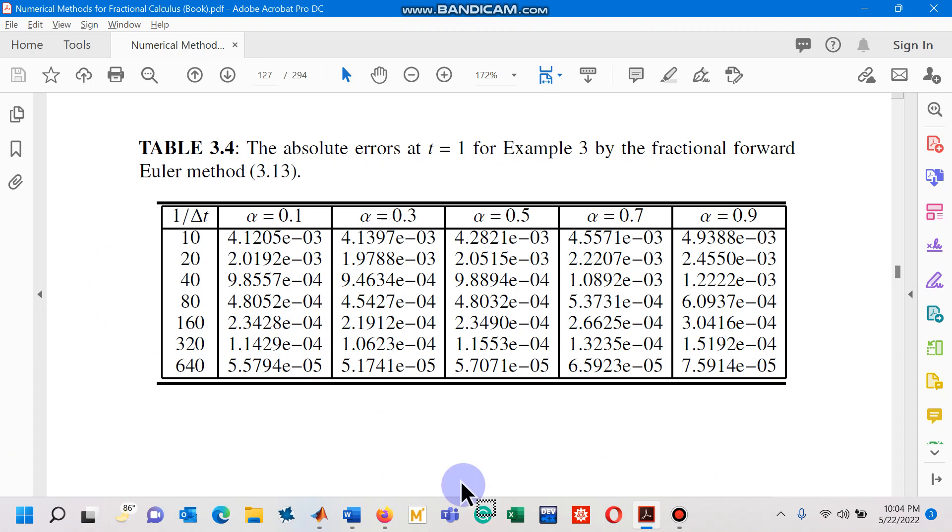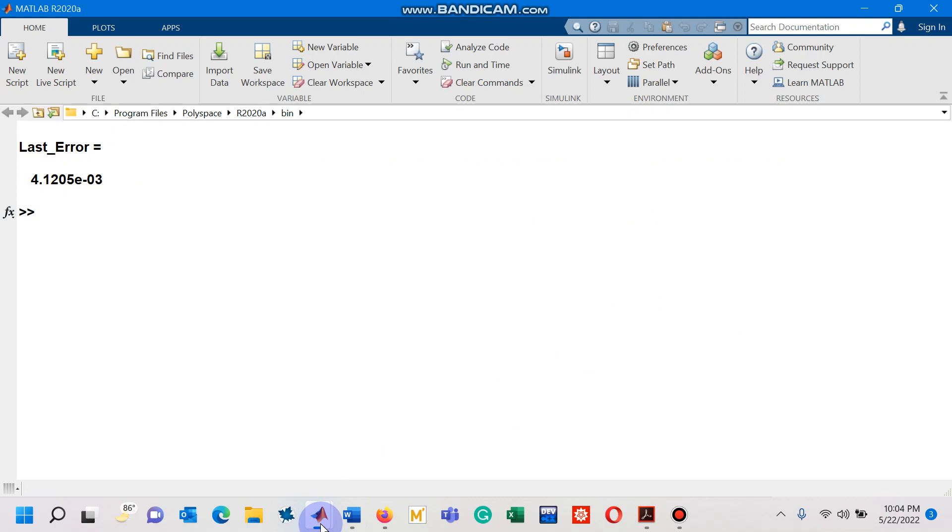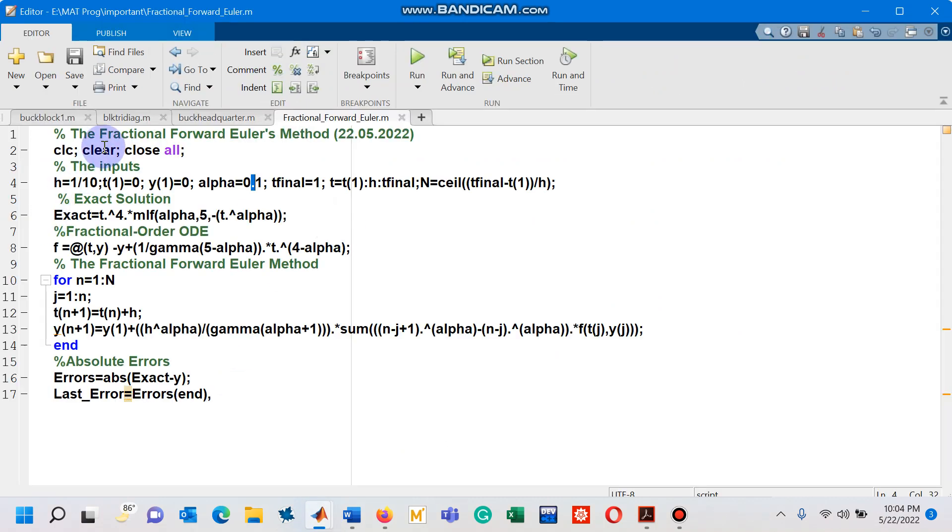Now arbitrarily I choose another fractional order, let's suppose 0.7, and the step size I choose as 1 upon 80. Let me go to my code: step size is 1 upon 80 and the fractional order is 0.7.